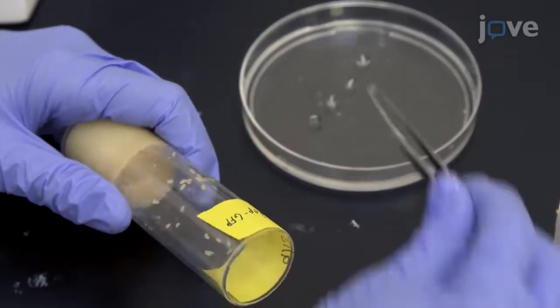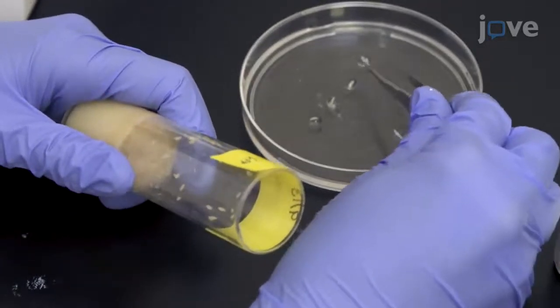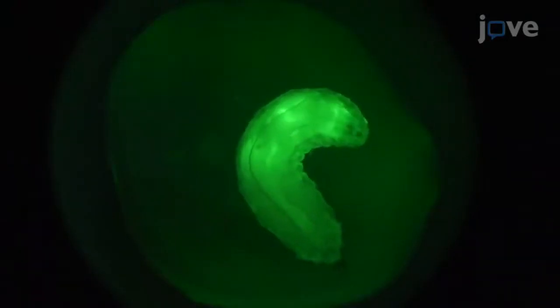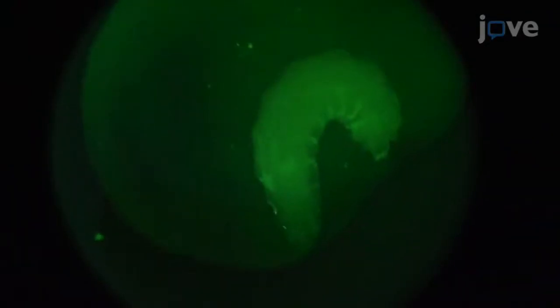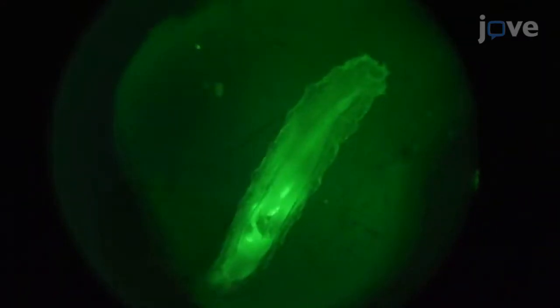To select the DPP-GFP expressing larvae, view them under a fluorescent stereomicroscope. All non-TB larvae will have some fluorescence, but the GFP is restricted to the wing discs and is less bright on the DPP-GFP larvae.